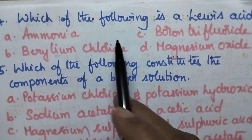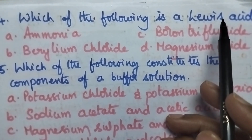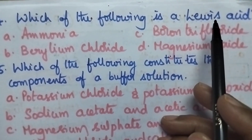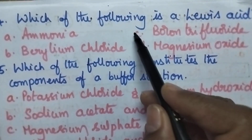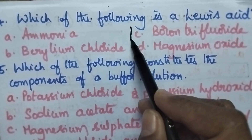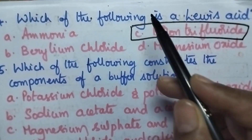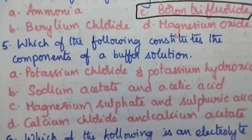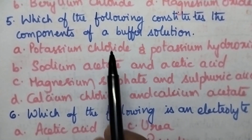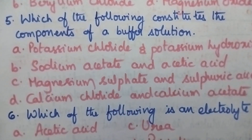Which of the following is a Lewis acid? A Lewis acid is an electron-deficient compound. Boron trifluoride (BF3) is a Lewis acid, so option C is the right answer.